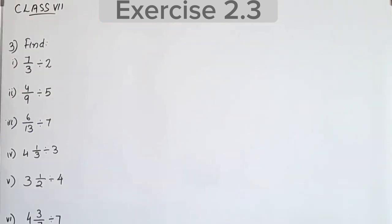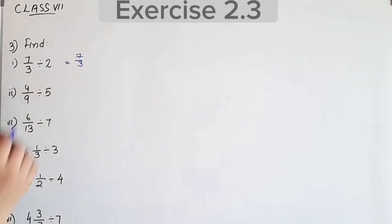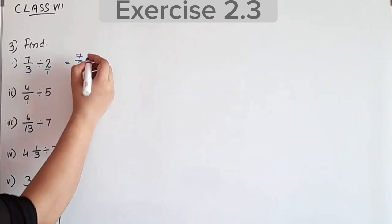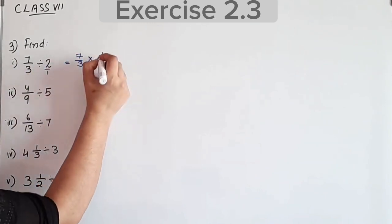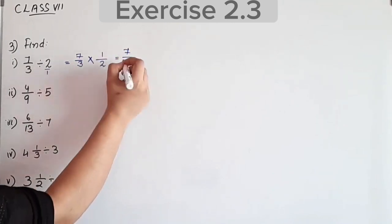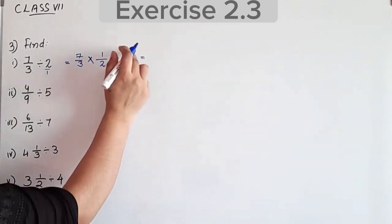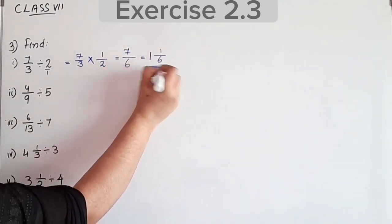Third question: find 7/3 divided by 2. We can do a fraction divided by a whole number — write 2 as 2/1, then take reciprocal to get 1/2. So 7/3 into 1/2: 7 by 1 is 7, 3 by 2 is 6. Therefore 7 by 6, and 7 minus 6 is 1, giving 1 and 1/6 as the answer.